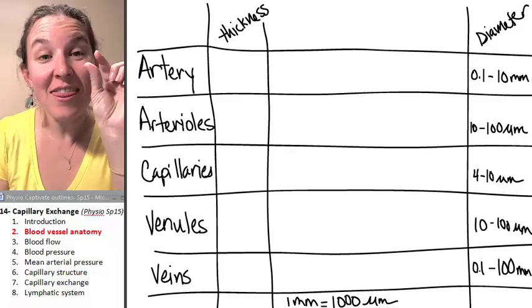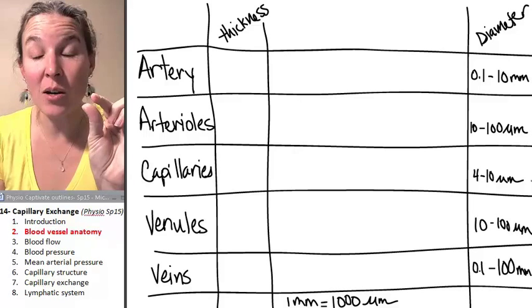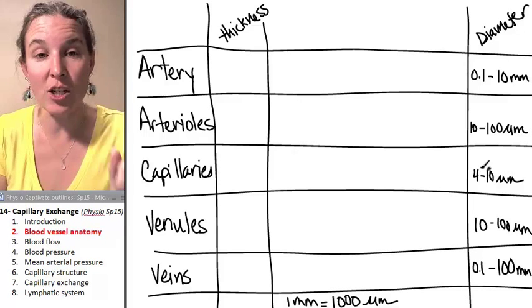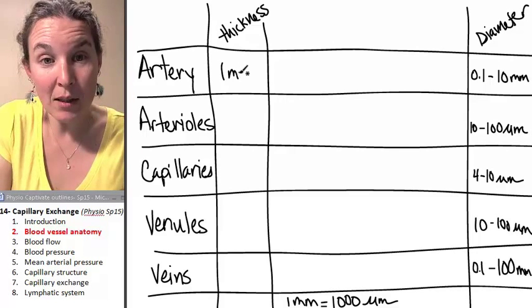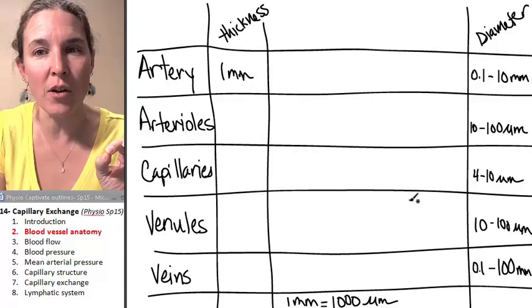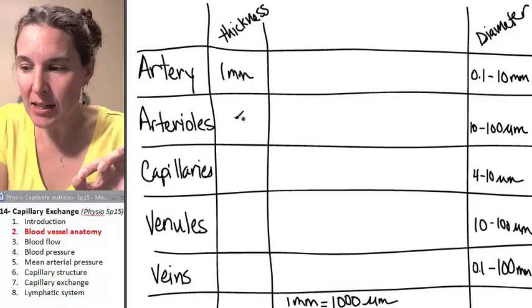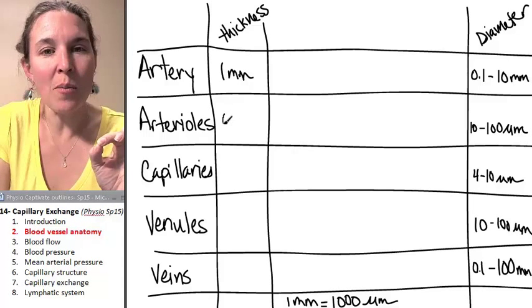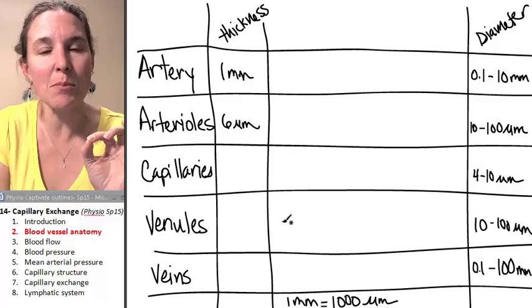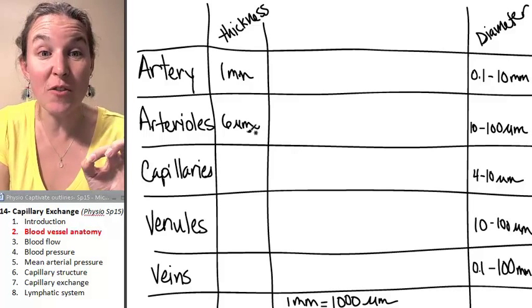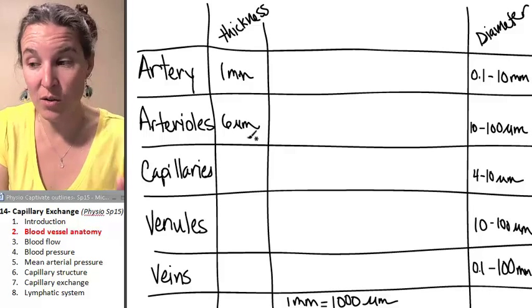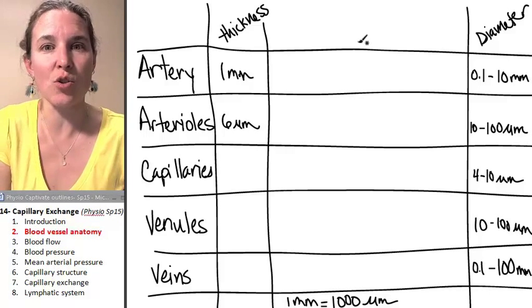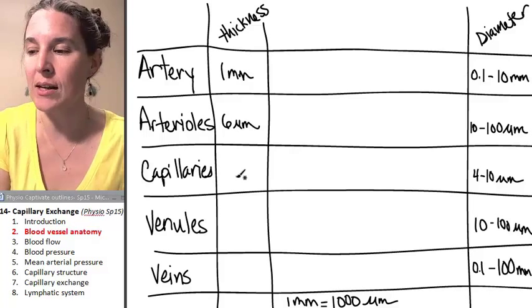Let's talk about the thickness of each of these because that's another number that is going to change with each of them. The thickness of an artery can be up to one millimeter. This is just the wall of the artery. The thickness of an arteriole is just six micrometers. So there's a huge difference between an artery and an arteriole when you talk about thickness. And we'll look at the structure of them and draw them here and see why that is.